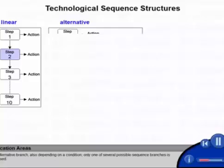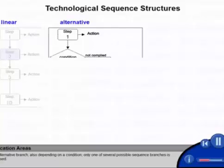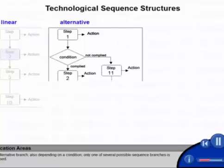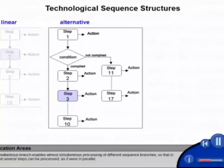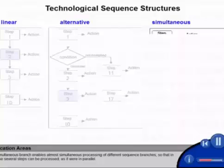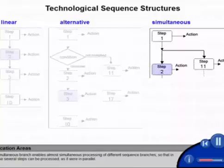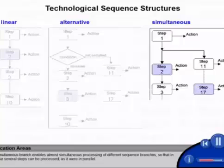In the alternative branch, also depending on a condition, only one of several possible sequence branches is processed. The simultaneous branch enables almost simultaneous processing of different sequence branches, so that in this case, several steps can be processed as it were in parallel.